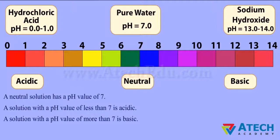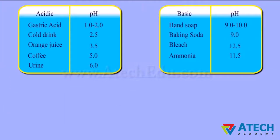Hydrochloric acid, whose pH value lies between 0 and 1, is acidic in nature. Sodium hydroxide, whose pH value is between 13 and 14, is basic in nature. Pure water with a pH value of 7 is neutral. Some items which are acidic in nature are gastric acid, cold drinks, orange juice, coffee, and urine. Hand soap, baking soda, bleach, and ammonia are basic in nature, as their pH value is more than 7.